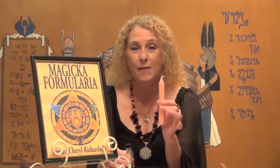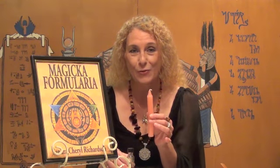To anoint a candle means that you take an oil or oils that are specially designed for your magical purpose and you place them upon the candle in a certain way. This is also referred to as dressing the candle.